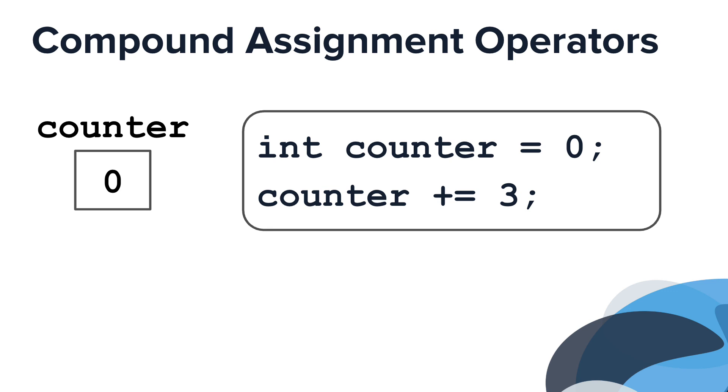The compound assignment operator works like this. It performs the indicated calculation between the value on the left and the value on the right. In this case, counter has the current value of 0, so the calculation is 0 plus 3. Then, the result, which in this case is 3, is assigned to the variable on the left.